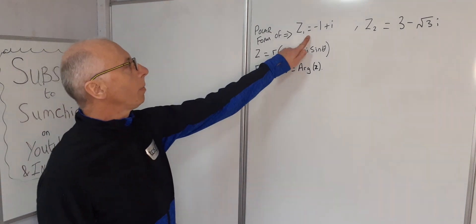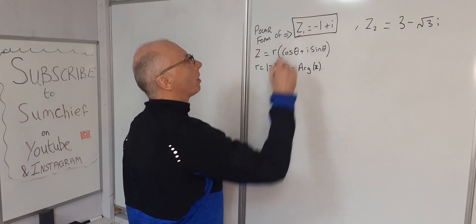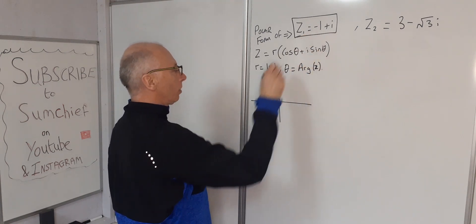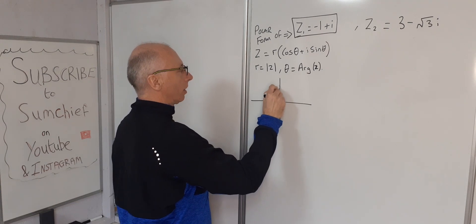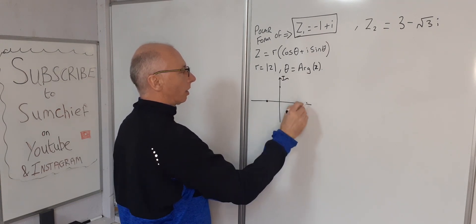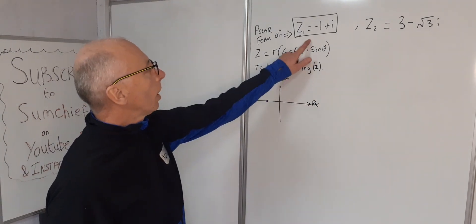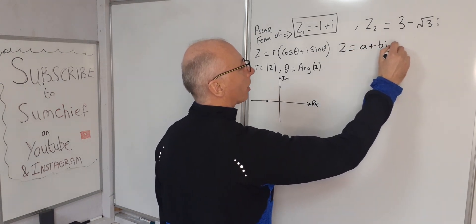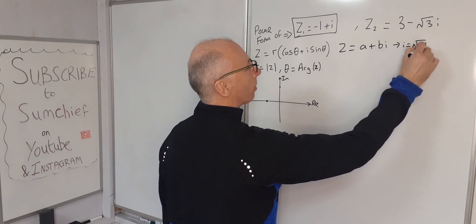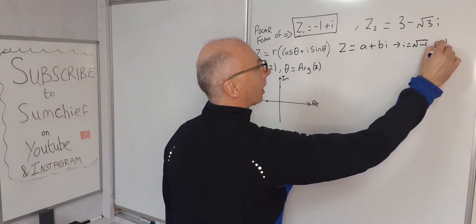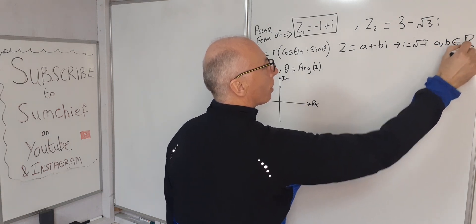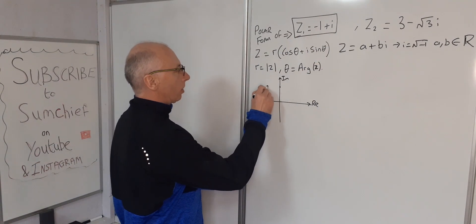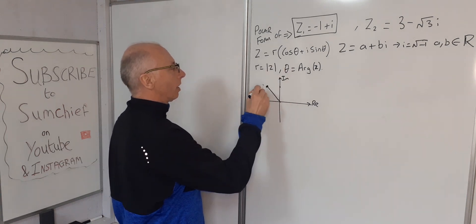Let's start with this one. Drawing this on the diagram here, we've got -1 on the reals and +i on the imaginaries. As we know, z = a + bi, where i equals square root of -1 and a and b are real numbers. Our a is -1 and our b is +1. This is our z₁.